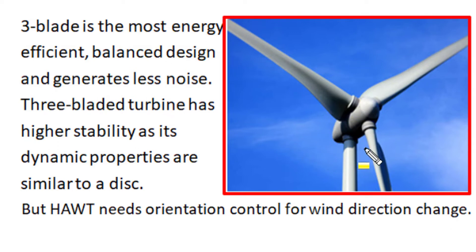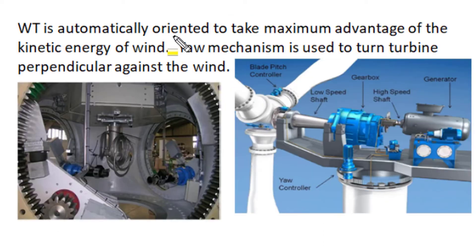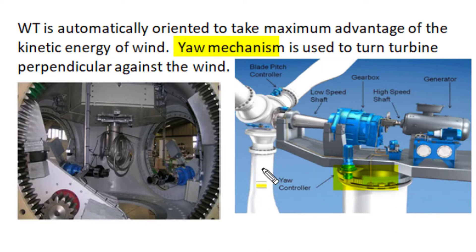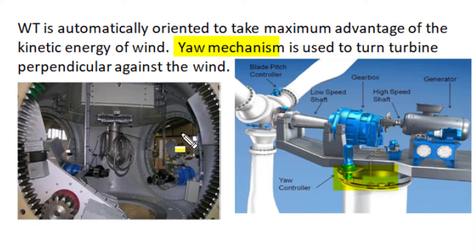All horizontal axis wind turbines need orientation control when the direction of wind changes, to harness wind energy at the optimum level. A yaw mechanism is provided on top of the tower, attached to the nacelle bed. This yaw mechanism is used to turn the nacelle bed such that the turbine gets its orientation perpendicular to the direction of wind blow, enabling it to take maximum advantage of the kinetic energy of the wind.